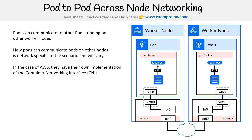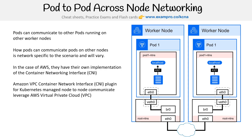In the case of AWS, they have their own implementation of the Container Networking Interface (CNI) called the Amazon VPC Container Network Interface plugin for Kubernetes, which allows node-to-node communication via the AWS Virtual Private Cloud. If you've used AWS, communication happens over your VPC. Every provider has some kind of solution, and when you set up on a managed provider, it's already installed and just works. You'll need to do research for each provider, but it's always going to involve some kind of CNI plugin.